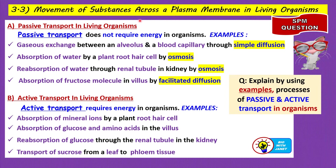Now let's go on to topic 3.3 — movement of substances across a plasma membrane in living organisms — which can also come out as an SPM question. There are two types of transport: passive transport and active transport. Let's look at examples of passive transport in living organisms.